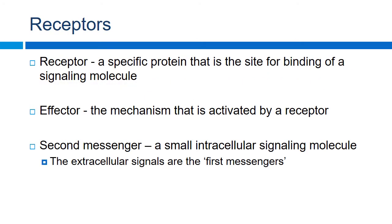The receptor is going to be that portion that actually binds to the signal molecule — whatever ligand binds to that receptor. The effector is going to be whatever mechanism happens downstream from that, such as opening of a channel or changing transcription of genes. We'll also look at secondary messengers — the drug or ligand binding to the receptor being the first messenger, and the secondary process that happens being the second messengers.